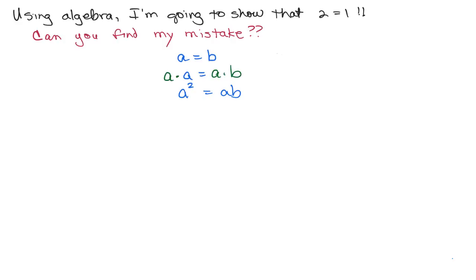Now I'm going to add A squared to both sides. I'll just combine like terms over here on the left-hand side. A squared plus A squared equals 2A squared. So I have 2A squared equals AB plus A squared.